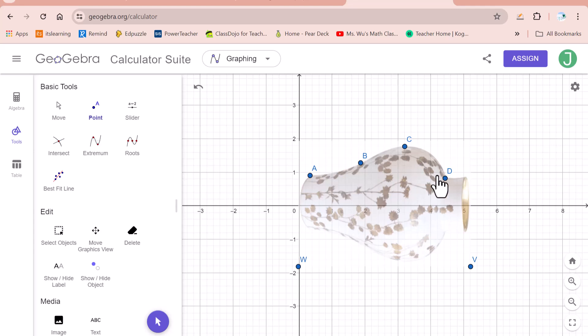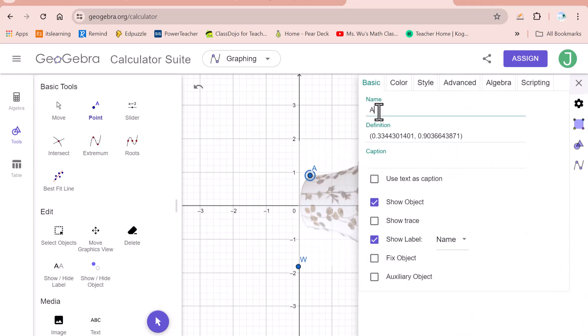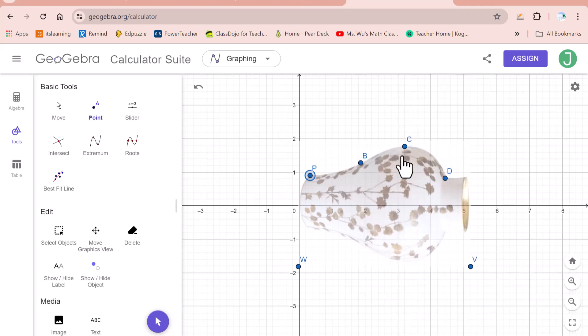You can change this alphabet letter if you want. Let me change this P, Q, R, S. Or you can just leave as A, B, C, D. It's really up to you.